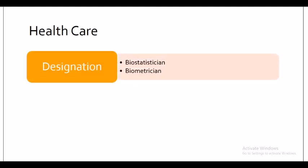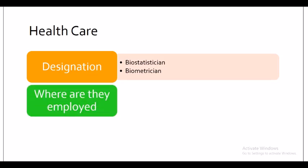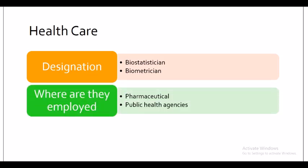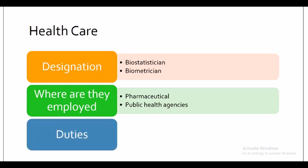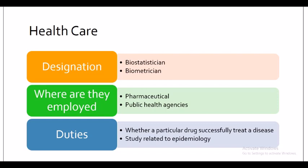In the healthcare sector, your designation will be biostatistician or biometrician. You will be employed by pharmaceutical companies and public health agencies. Your duties will include checking whether a particular drug can successfully treat a disease, and conducting studies related to epidemiology.